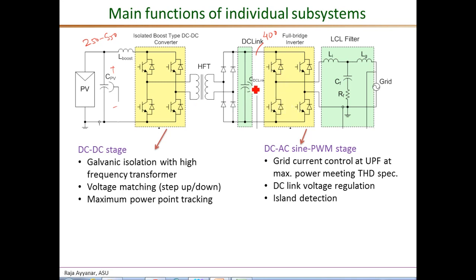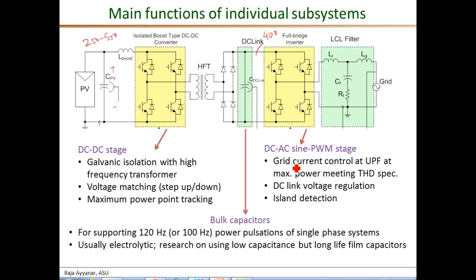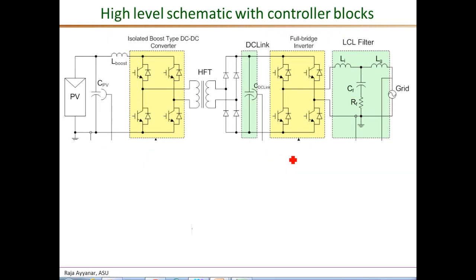The boost stage draws the maximum possible power from the PV and dumps it into the DC link, and the DC-AC stage, by regulating the DC link voltage to the set value, injects the correct power into the grid. The DC-AC stage is also responsible for the anti-islanding control loop. The role of the bulk capacitors is to balance the difference between the pulsating power at the grid output and the continuous DC power drawn from the PV. This balance is supported by the DC link capacitor, which is currently a large electrolytic capacitor array, though research is ongoing to use low-capacitance, long-life film capacitors.